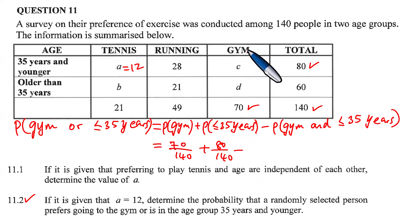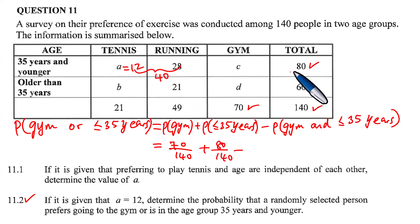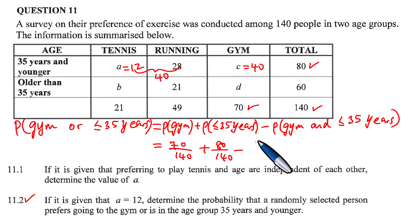For P(Gym AND ≤35 years), we look at cell C — gym and 35 years and younger. We know A equals 12 and running in the younger group is 28, so 12 plus 28 equals 40, meaning C equals 40 (since the younger group total is 80 and 40 plus 40 equals 80). Therefore P(Gym AND ≤35 years) = 40/140.